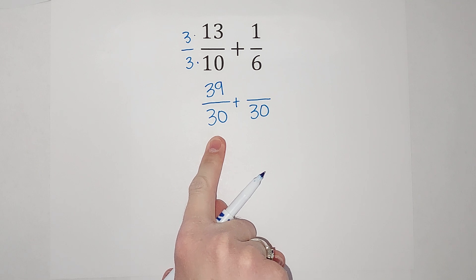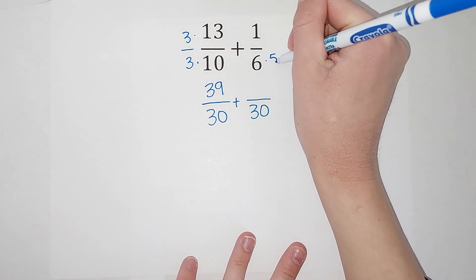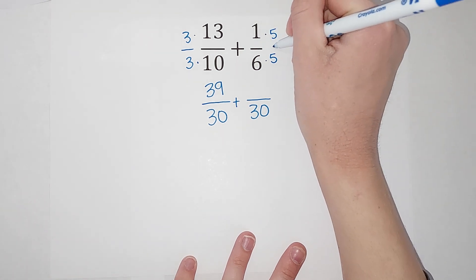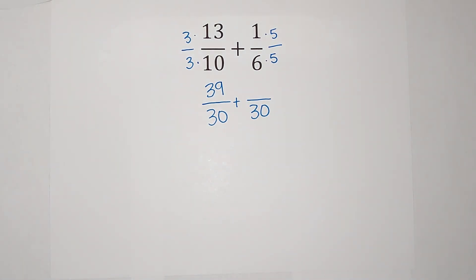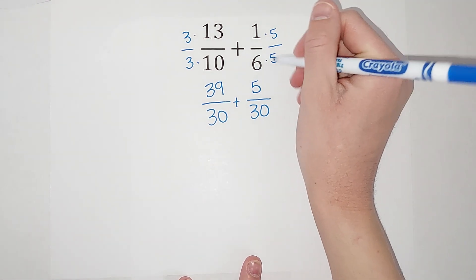Now on the other side, what do I multiply 6 by to get 30? I multiply it by 5. But just like on the other side, I gotta multiply by 5 over 5 so that my fraction stays the same. So 1 times 5 gives me 5, and 6 times 5 gives me 30.